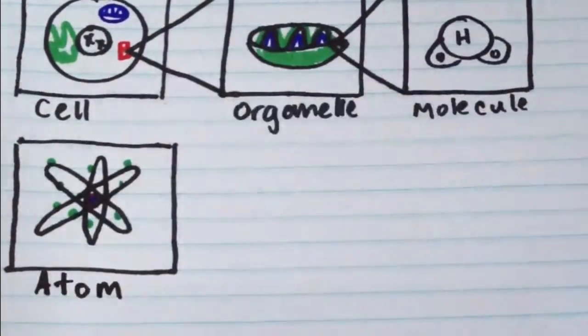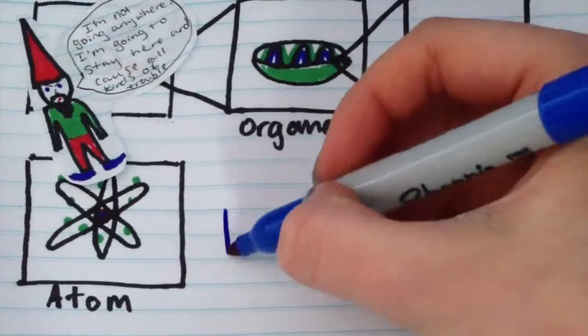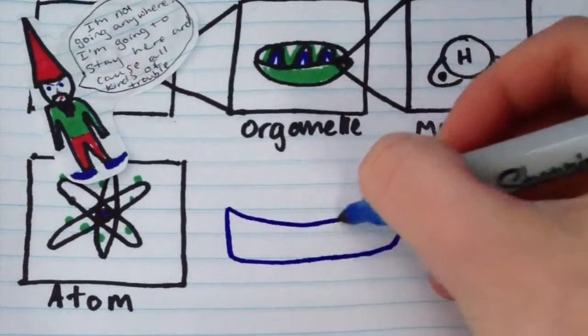Atoms are some electrons, protons, and neutrons. Now you're probably wondering, what are electrons, protons, and neutrons?